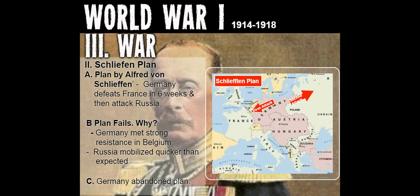Every available soldier was hurled into the struggle, and when reinforcements were needed, more than 600 taxi cabs rushed soldiers from Paris to the front. After four days of fighting, the German generals gave the order to retreat. The plan failed because Germany met strong resistance in Belgium, France resisted, and Russia was also able to mobilize their supplies much quicker than the Germans expected. In the end, they abandoned the Schlieffen Plan and retreated.